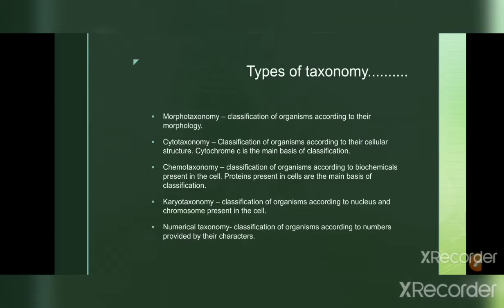Cytotaxonomy is the classification of organisms according to their cellular structure and the presence of cytochrome c. Cytochrome c is a small heme protein found closely associated with the inner membrane of mitochondria. It is a ubiquitous protein that has changed very little over millions of years of evolution, sharing a common amino acid sequence among many species. It is found in plants, animals, and many unicellular organisms.